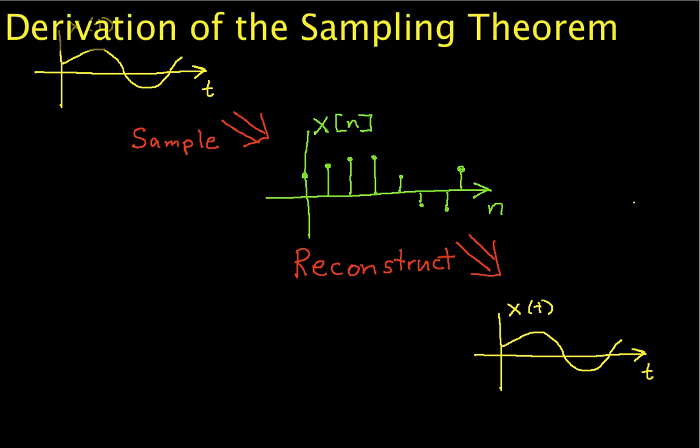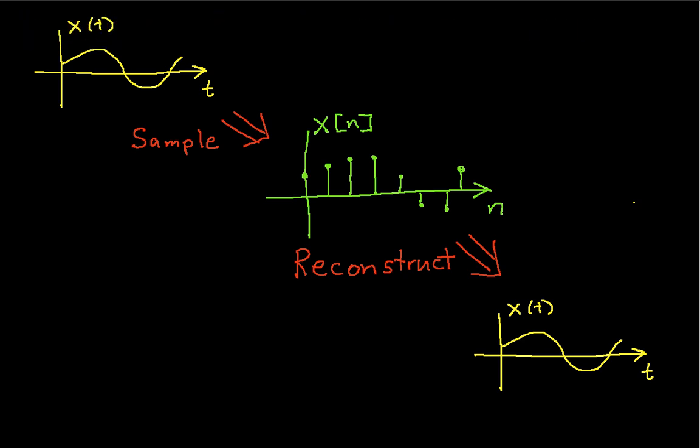The purpose of this video is to go through a somewhat mathematical derivation of the sampling theorem. To help illustrate what goes on in this process, we will use several properties of Fourier transforms, so this is also a useful exercise in terms of describing how Fourier transforms work.